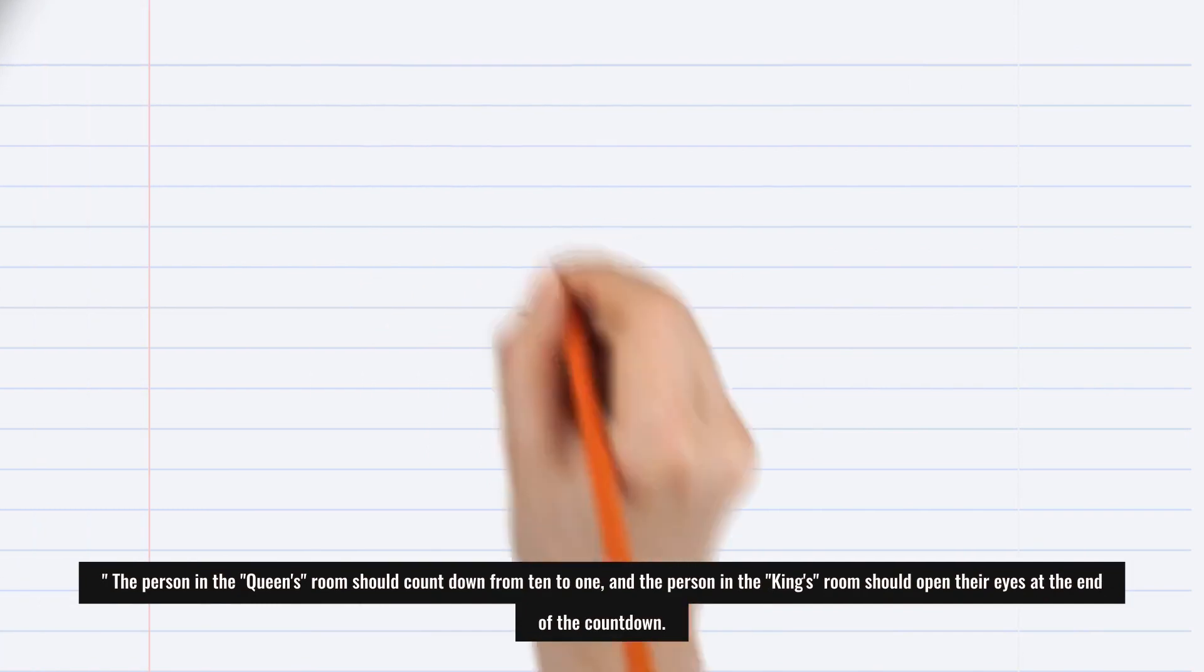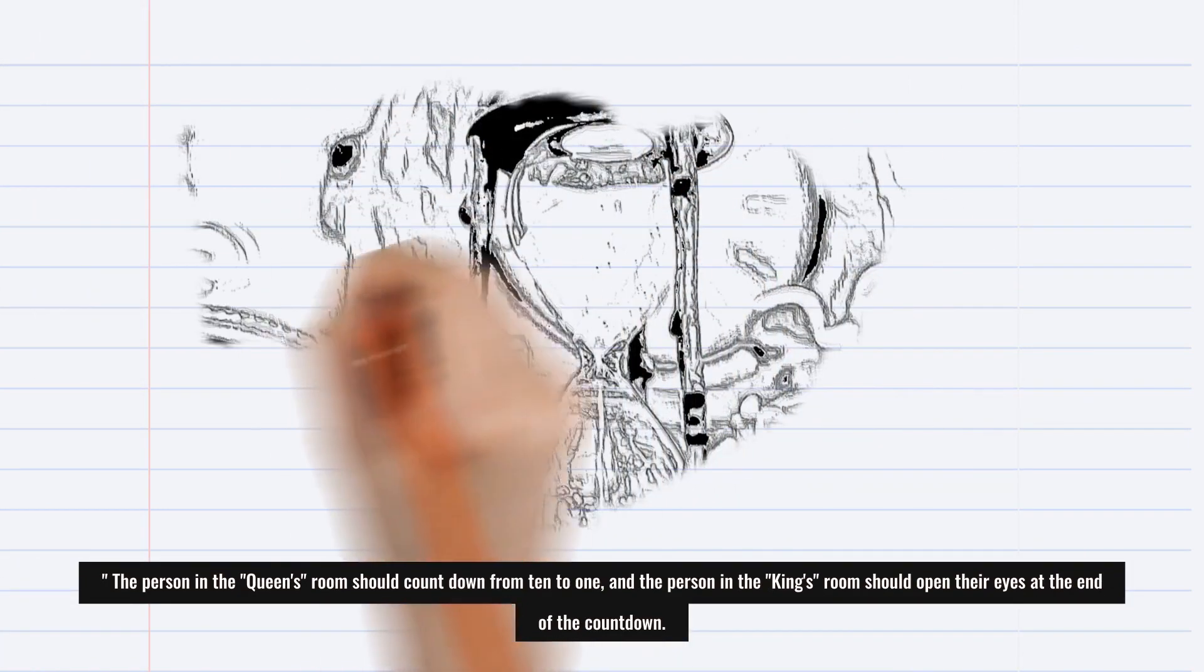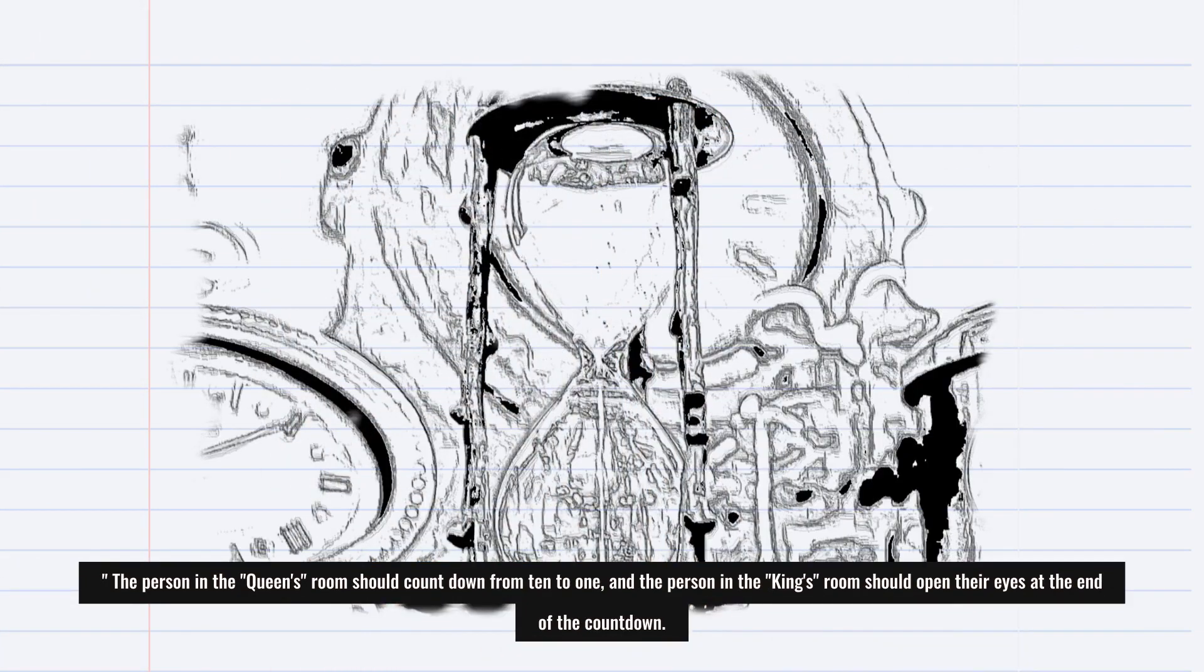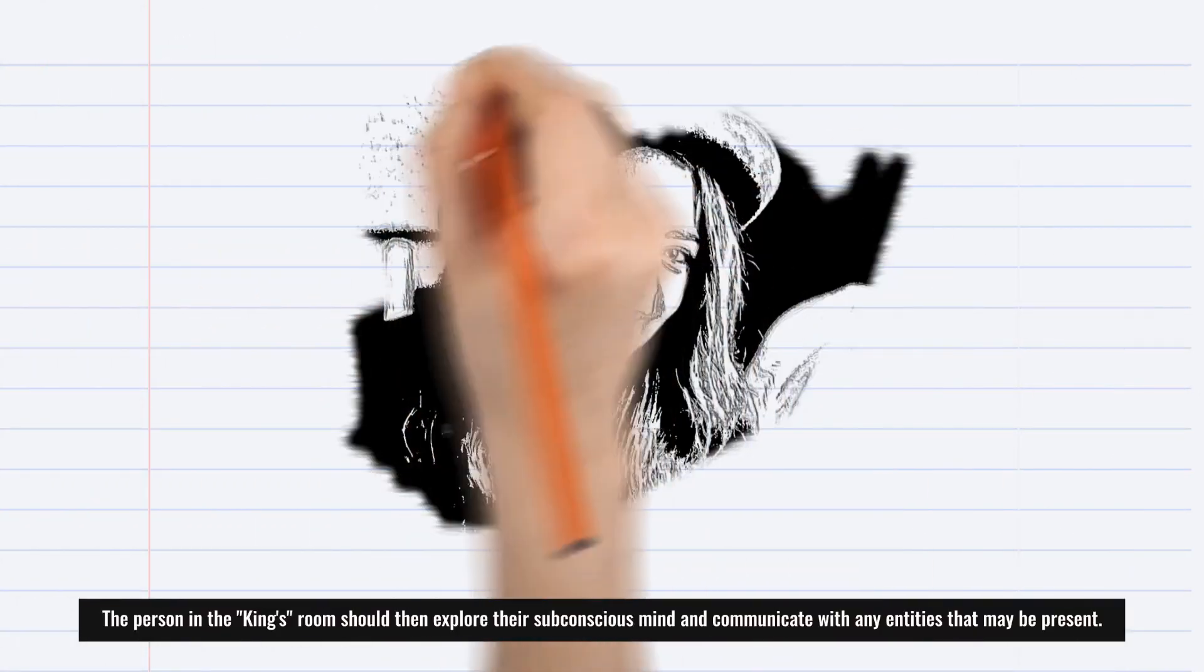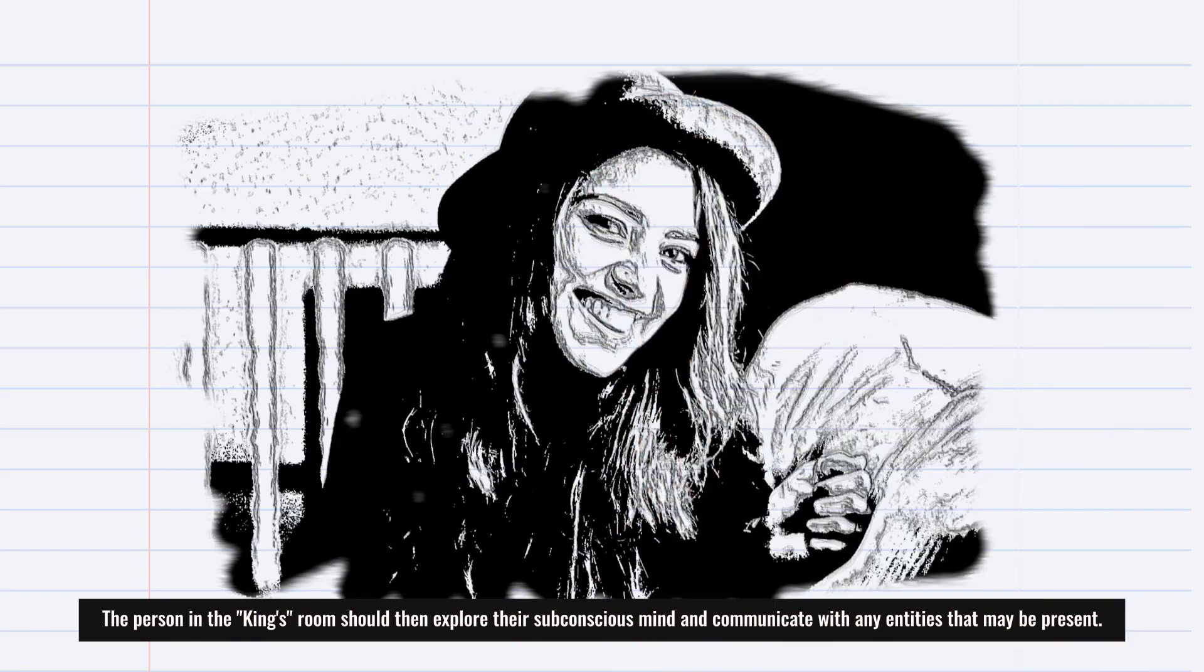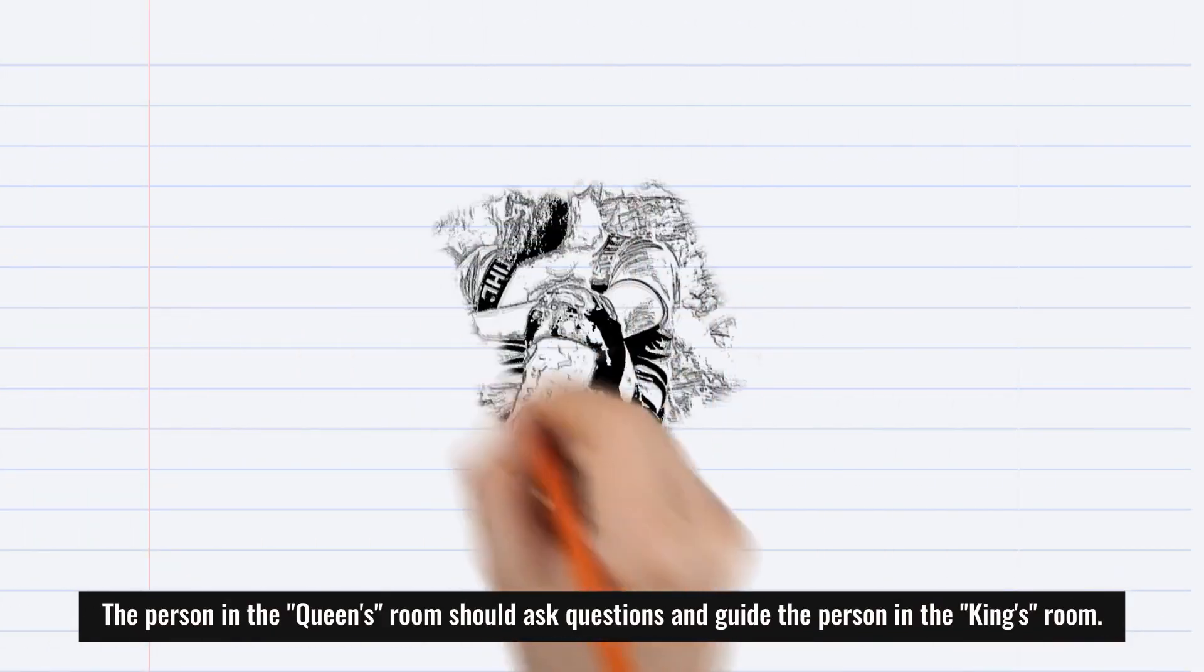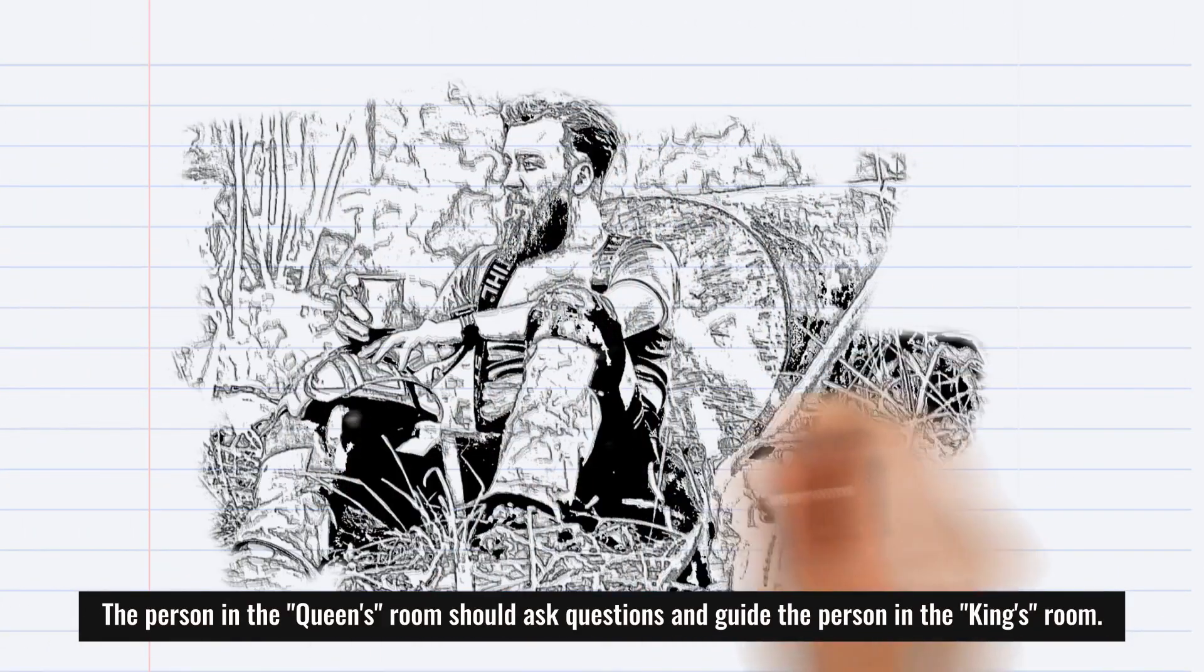The person in the queen's room should count down from 10 to 1, and the person in the king's room should open their eyes at the end of the countdown. The person in the king's room should then explore their subconscious mind and communicate with any entities that may be present. The person in the queen's room should ask questions and guide the person in the king's room.